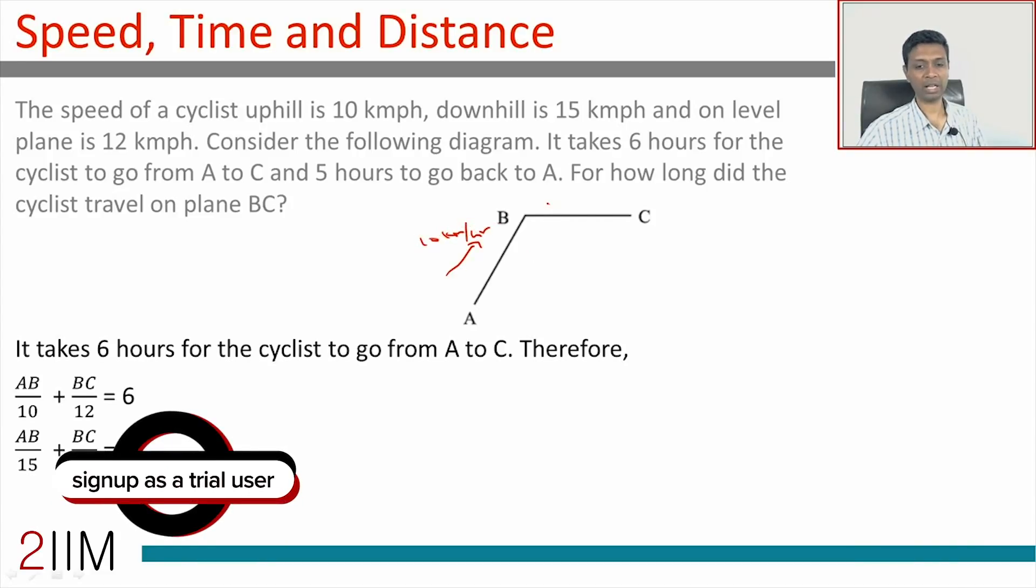This is 12 kilometers per hour, plus BC by 12, 6. BC by 12 plus AB by 15 is 5. That's all we need to do.